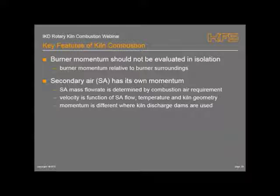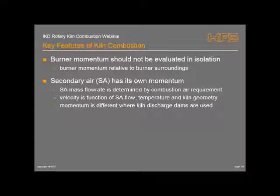Burner momentum should not be evaluated in isolation - it should be evaluated for each kiln, looking at all the variables important in terms of burner momentum and its surroundings. The secondary air has its own momentum. The secondary air mass flow rate can be determined by the amount of air required for total combustion, balancing what's put into the burner and what's missing. The velocity of secondary air is a function of its mass flow rate, its temperature as it comes into the kiln heated from the passing product, and the kiln geometry. A narrower diameter kiln will have the same secondary air going faster and therefore higher momentum. Every kiln needs to be evaluated individually for design purposes.